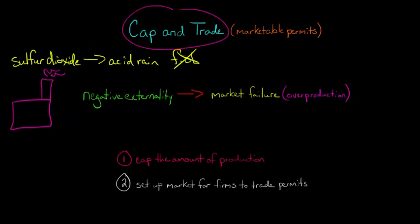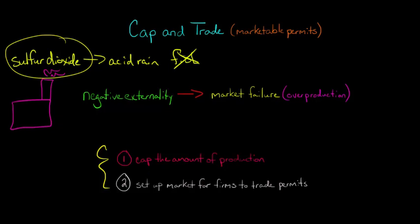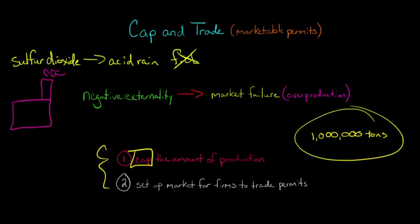Cap and trade says we're going to do a couple of things to stop that. First of all, we're going to put a cap on the total amount of sulfur dioxide emissions. Let's say 1 million tons is the cap on sulfur dioxide. Firms cannot produce or generate more than a million tons of sulfur dioxide in any given year. That's the cap in cap and trade.